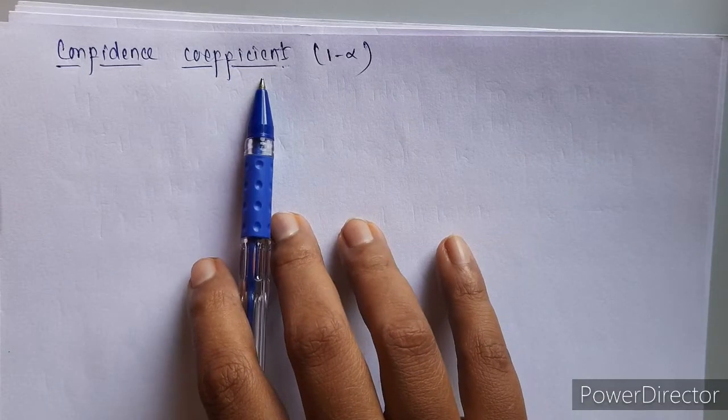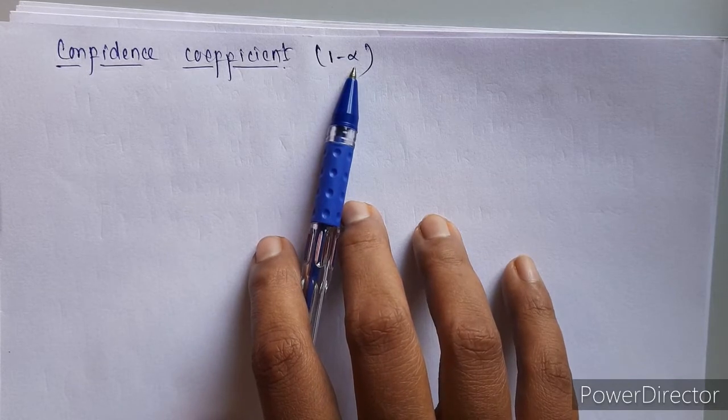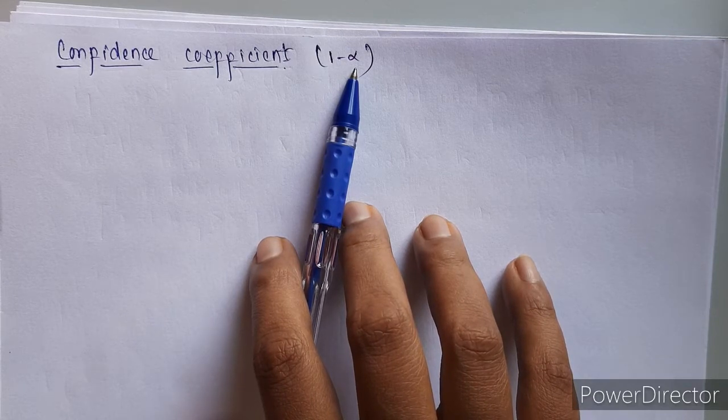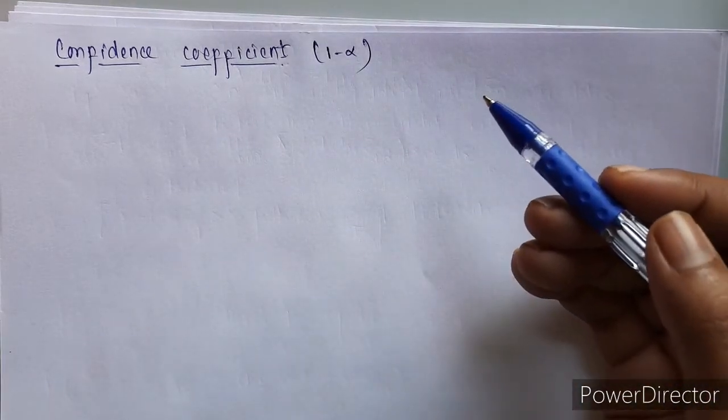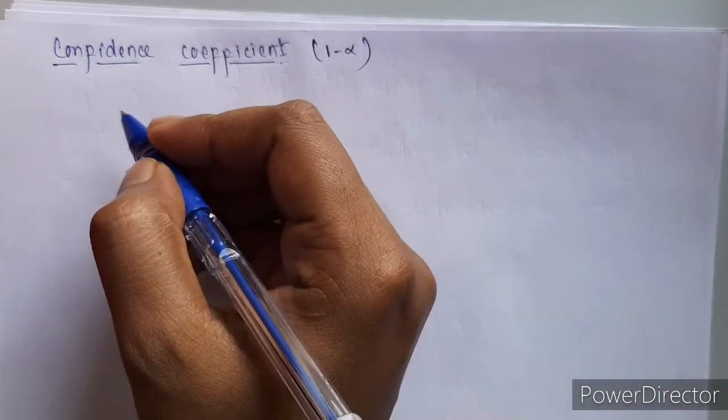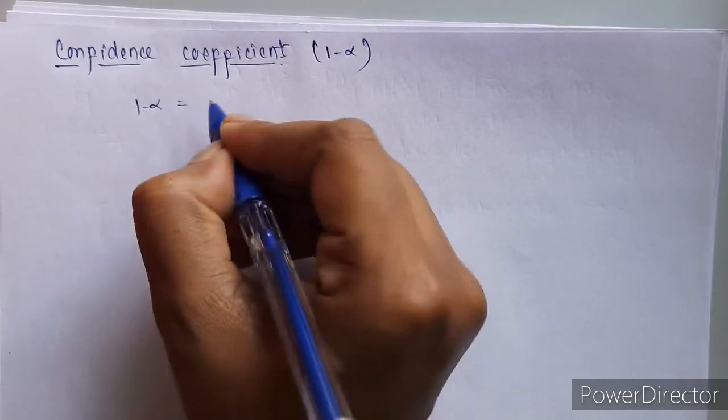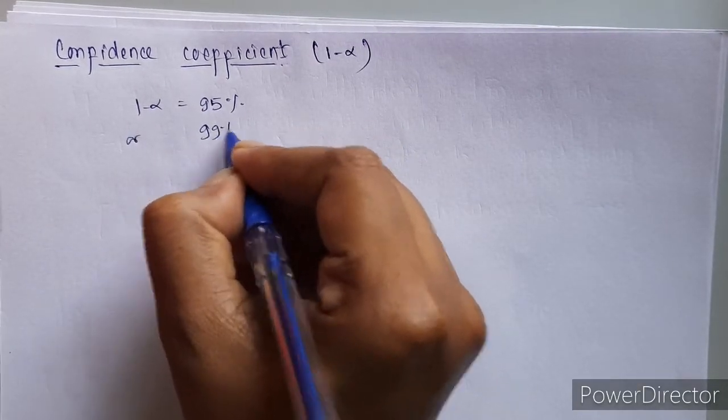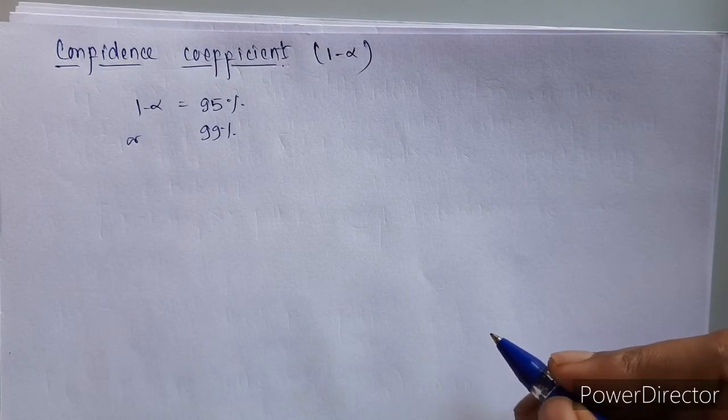Confidence coefficient is given by 1 minus alpha. Now what is confidence coefficient? Whatever parameters we will be finding out, whatever parameters we will be calculating, to what extent we are confident about those particular parameters. Now this confidence coefficient is also called as a level of confidence. It can basically, in theoretical part, be either taken as 95 percent or it can be taken as 99 percent.